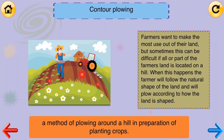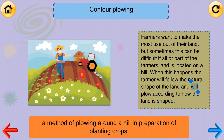Contour Plowing: a method of plowing around a hill in preparation for planting crops. Farmers want to make the most use of their land, but sometimes this can be difficult if all or part of the farmer's land is located on a hill. When this happens, the farmer will follow the natural shape of the land and will plow according to how the land is shaped.